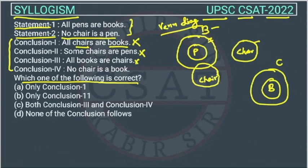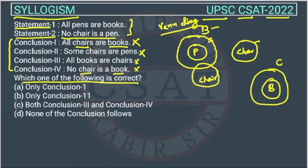Conclusion 4: no chair is a book. The relationship between chair and book is not given in the statements — we only know about pens and books, and chairs and pens. So we cannot conclude that no chair is a book either. This conclusion is also wrong.